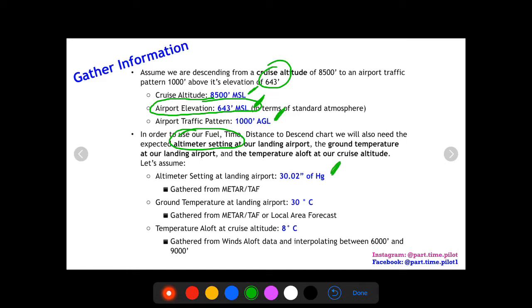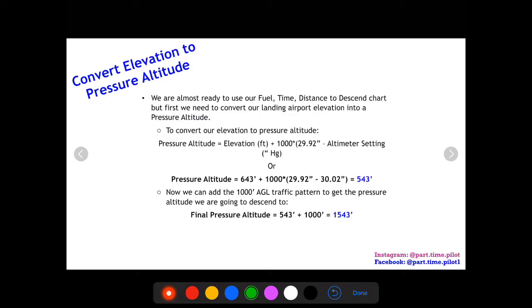Let's assume that our altimeter setting is 30.02. You can get this from a METAR TAF. The ground temperature at landing airport is 30 degrees Celsius, and then our temperature aloft is 8 degrees Celsius. We can get that from winds aloft. So now we're almost ready to use the fuel time distance to descend chart, but first, like I said, we need to convert our airport elevation into a pressure altitude.